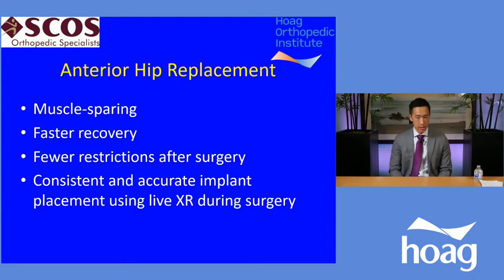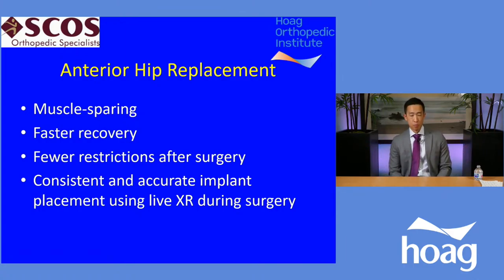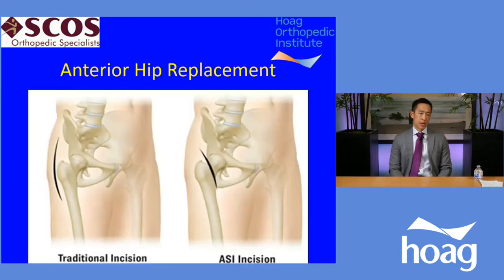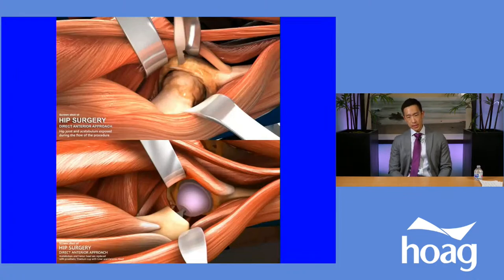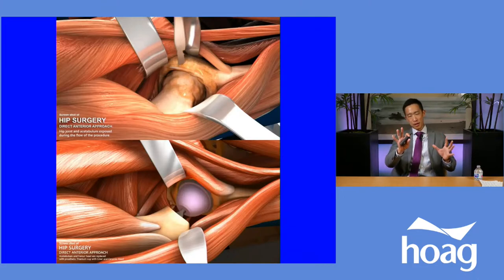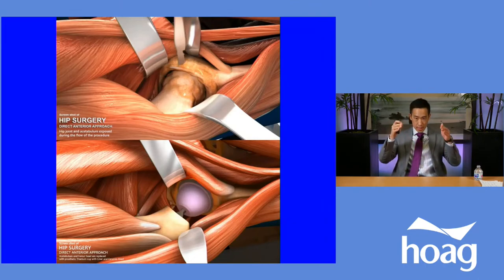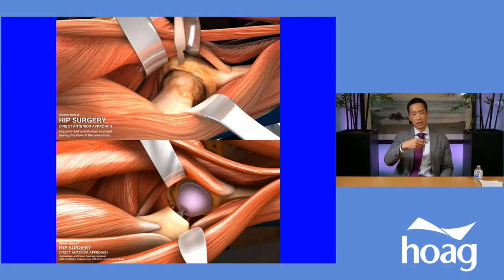The benefits of the anterior — meaning front — hip replacement all come from being muscle-sparing: faster recovery, fewer restrictions after surgery. Additionally, because the patient lies on their back during surgery rather than on their side, we can use live x-ray during the procedure, allowing the surgeon to position the implants more consistently and accurately. The traditional incision is on the side or back over the buttock, whereas the anterior approach uses a smaller incision at the front of the hip. The muscles are simply pushed apart, not cut — giving access to the hip joint while preserving surrounding soft tissue.